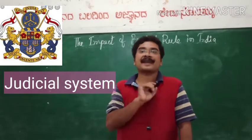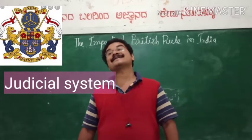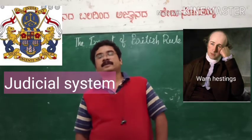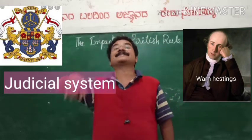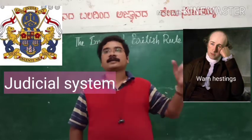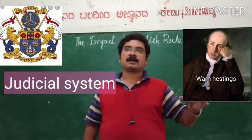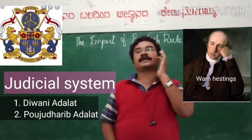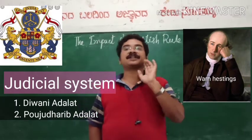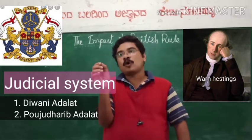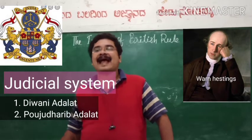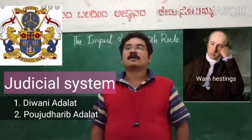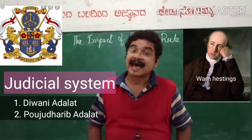According to the administrative plan devised by Warren Hastings, who took over the administration as governor in 1772 CE, two types of courts were established in each district. One is Diwani Adalat, working as a civil court, and another is Faujdari Adalat, working as a criminal court.